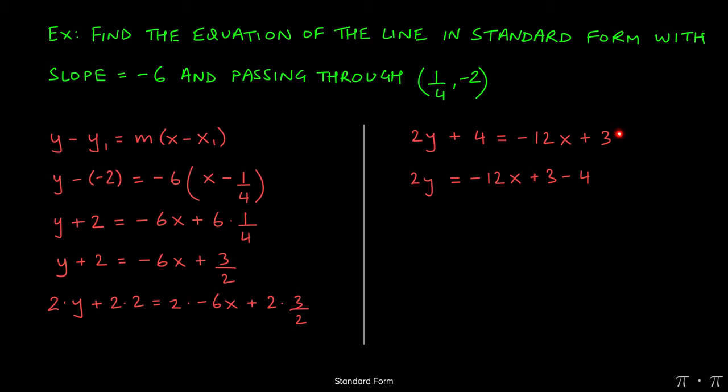So if we move the 4 over to the right, it becomes a negative 4. 3 minus the 4 gives us a negative 1. Now we can move the negative 12x over to the other side, giving us a positive 12x plus 2y equals negative 1.